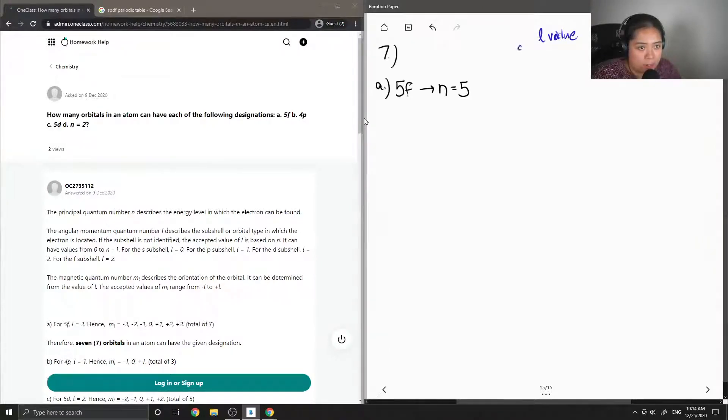So when you have an electron in the s block, its l value is zero. For the p block, it's one. The d block, it's two. And for the f block, it's three.